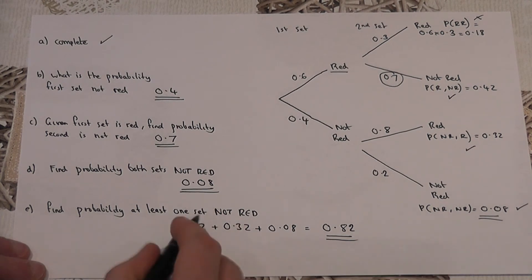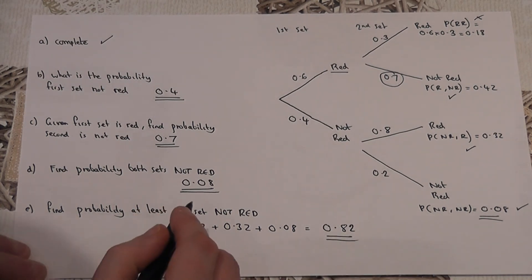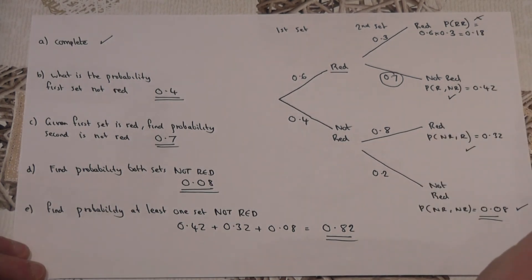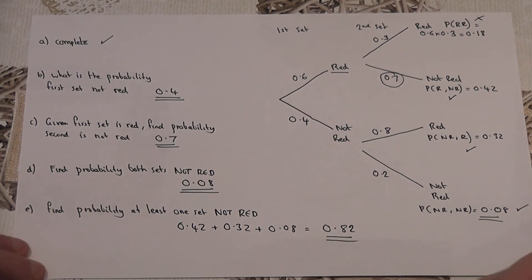So the probability that at least one set is not red is 0.82. Just an aside, the other calculation is to do one minus the crossed off one. Because one take away 0.18 is also 0.82.